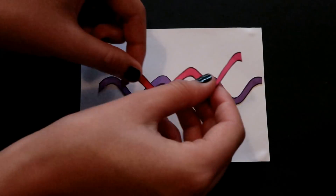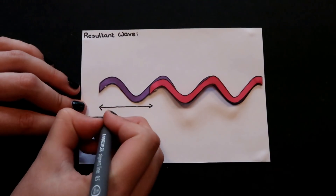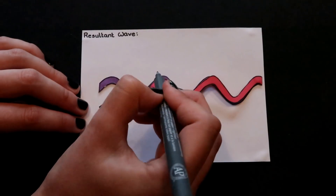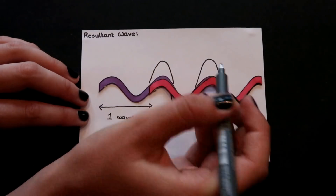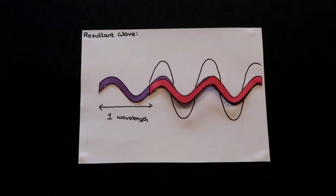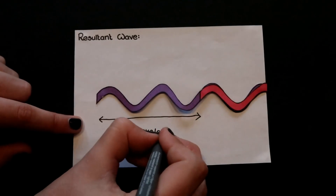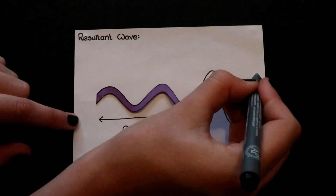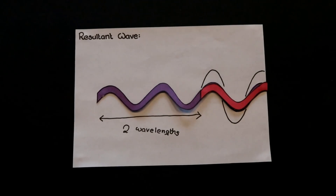Well, let's see what happens if we shift the start of the second wave along by one wavelength. We say this has a path difference of one wavelength, because the first wave has travelled one wavelength further than the second. As we can see, this doesn't change anything — if we add the two waves together again, we still end up with constructive interference. What about a path difference of two wavelengths? We're still seeing the same thing, and we'd see the same thing with three wavelengths, four wavelengths, and so on. In general, if one wave has travelled a whole number of wavelengths further than the other, we end up with constructive interference.